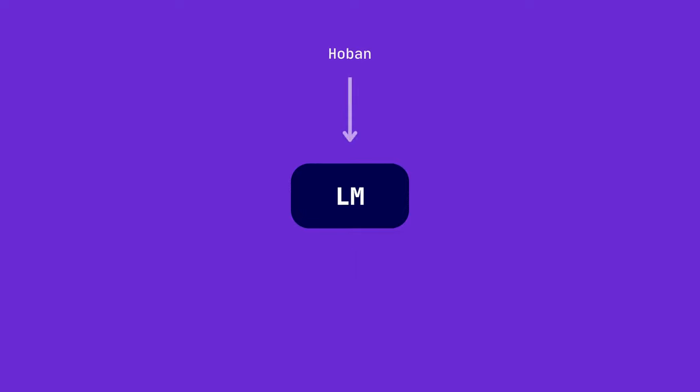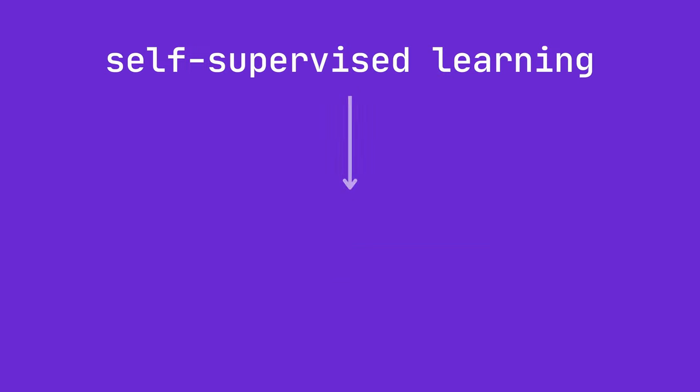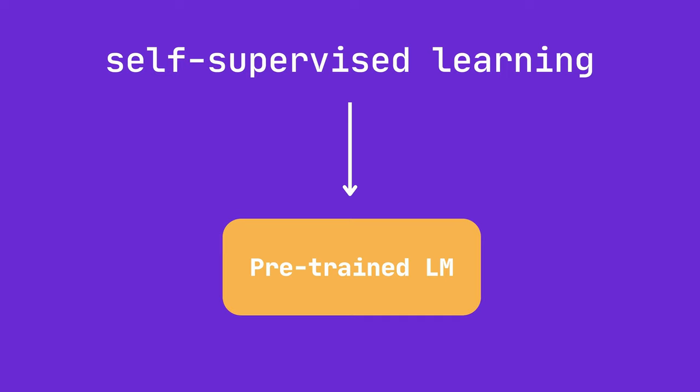One can say that via this process, the model creates an internal representation of language. The outcome of this training process is a pre-trained language model. By exposure to diverse linguistic patterns, the model now has a foundational understanding of natural language and for generating contextually appropriate and coherent text. Some people refer to such pre-trained models as foundation models.